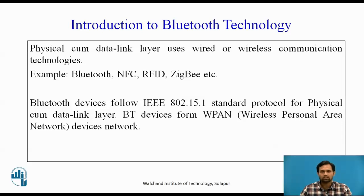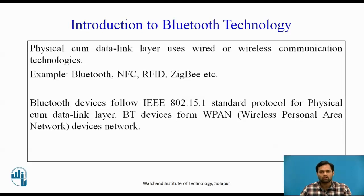In Internet of Things, devices or digital gadgets are connected or interconnected with each other. They can send, receive data, or communicate with each other with the help of the Internet. In that case, it is required to use communication technologies like Bluetooth, NFC, RFID, or ZigBee. Now we are studying how Bluetooth technology is helpful for communication between two devices which we are going to use in Internet of Things.